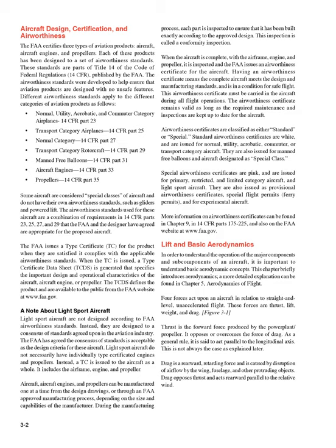Different airworthiness standards apply to the different categories of aviation products as follows: Normal, Utility, Acrobatic, and Commuter Category Airplanes — 14 CFR Part 23; Transport Category Airplanes — 14 CFR Part 25; Normal Category Rotorcraft — 14 CFR Part 27; Transport Category Rotorcraft — 14 CFR Part 29; Manned Free Balloons — 14 CFR Part 31; Aircraft Engines — 14 CFR Part 33; Propellers — 14 CFR Part 35. Some aircraft are considered special classes and do not have their own airworthiness standards, such as gliders and powered lift.